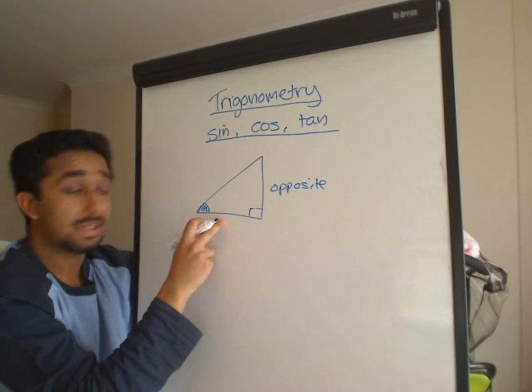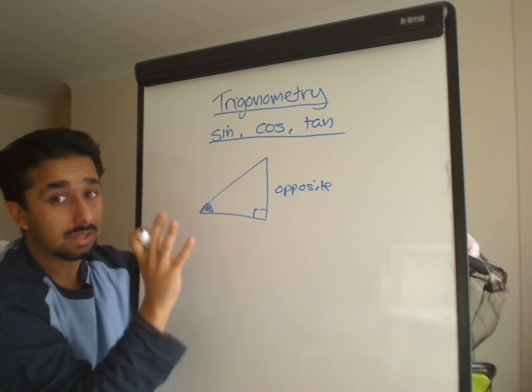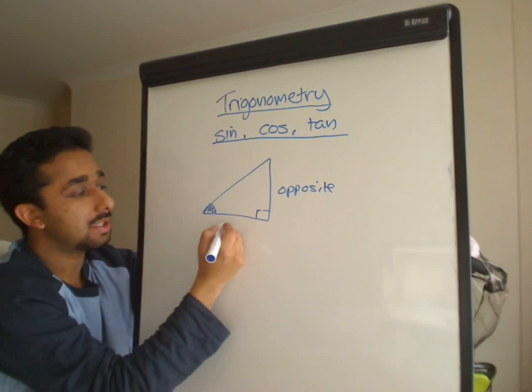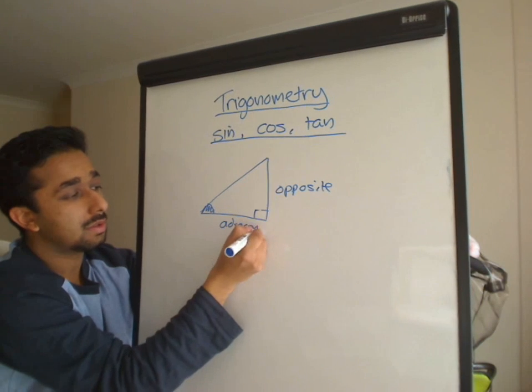The side next to the angle, here this the angle, or the angle we'll say, is called the adjacent. Because another word for next to is adjacent.